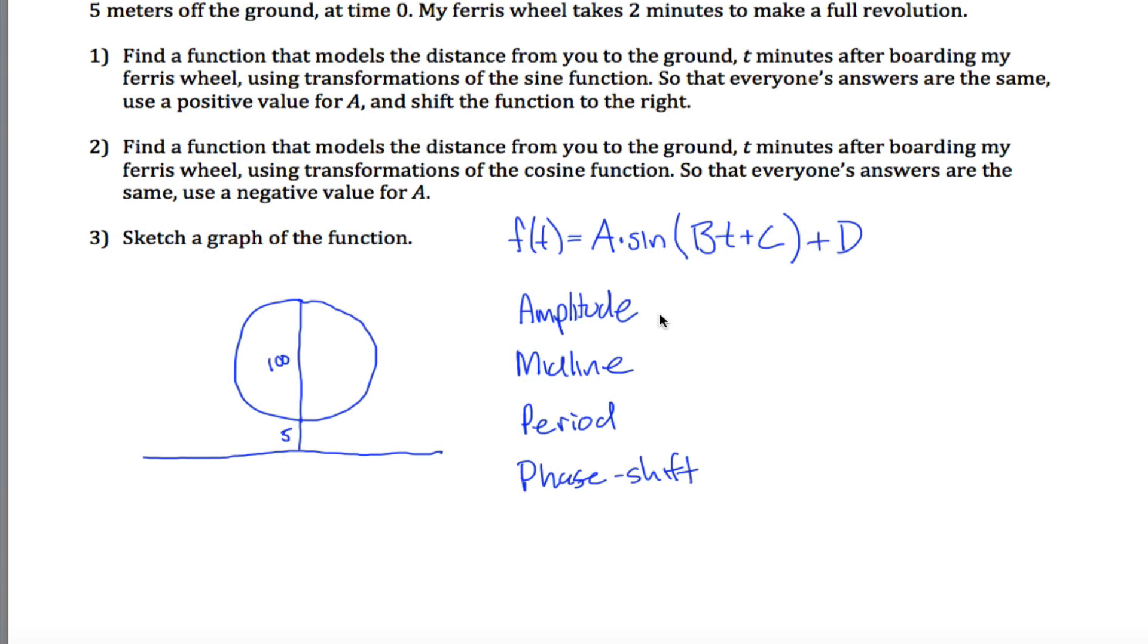So to figure out the amplitude, the amplitude is defined to be half the distance from the top to the bottom. So the highest you'll ever be off the ground would be 105 feet. The lowest you'll ever be will be 5 feet, and half the distance between 105 and 5 is 100, and half of 100 is just 50.